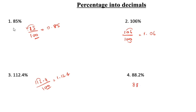This is 88.2 divided by 100 as the percentage. There are 2 zeros, so you have to take these 2 places. The answer is 0.882.